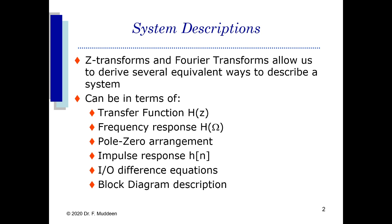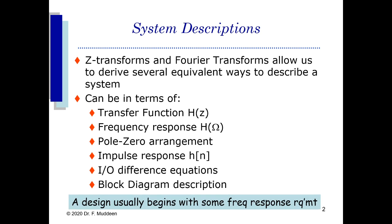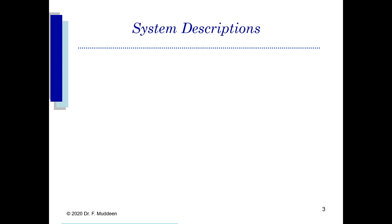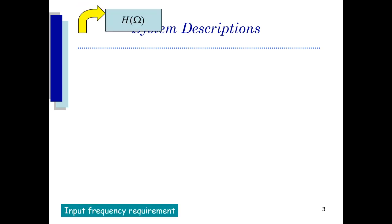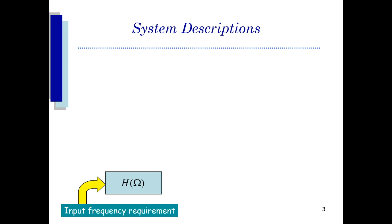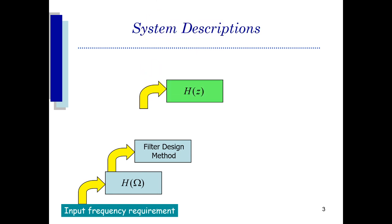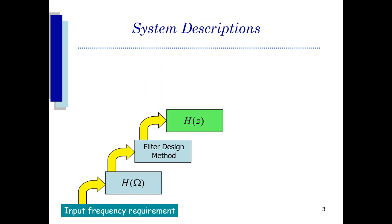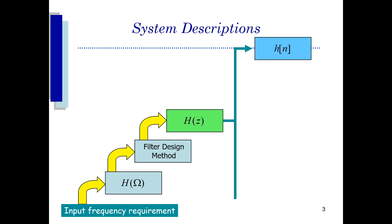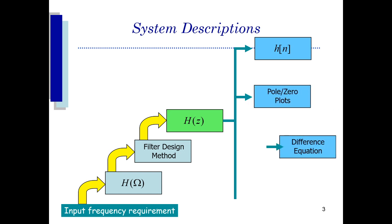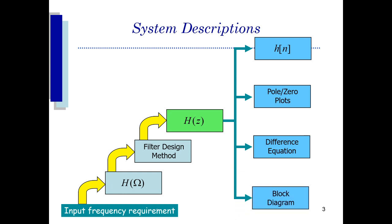Whenever we are designing a filter or system, the first thing we figure out is the frequency response requirement for the entire system. We start with our input frequency requirement and design with respect to H(ω). Once we have H(ω), we do our filter design method and form H(Z), which can be represented in all different forms: inverse Z-transform to get h(n), a pole-zero plot, a difference equation, or a block diagram.